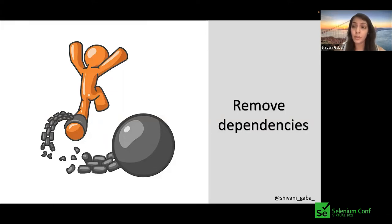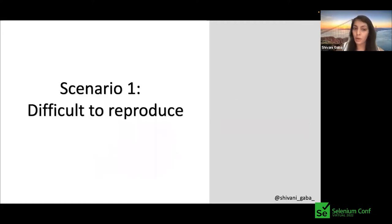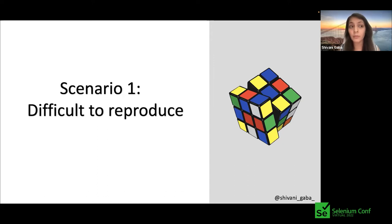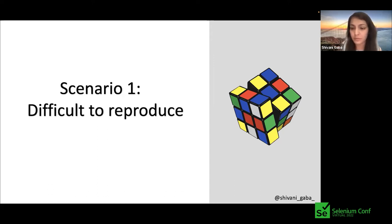Now that we've learned how to remove the dependency to test in isolation and automate cases easily, let's go through different scenarios where this technique can be applied. Scenario one: difficult to reproduce scenarios. A lot of times we have to set up many things before we can even start testing. For example, consider the thunderstorm case — how would we test that? We'd have to find a city with a thunderstorm, or just pray.